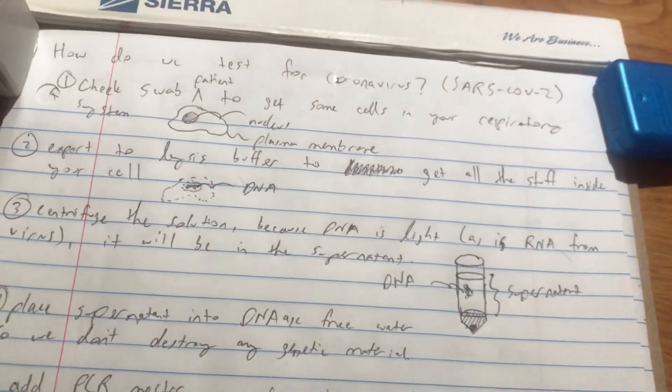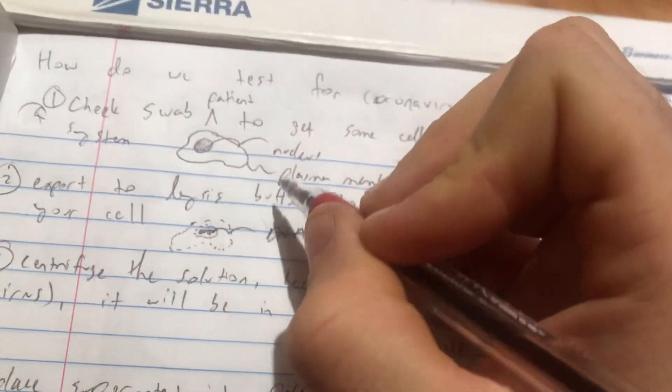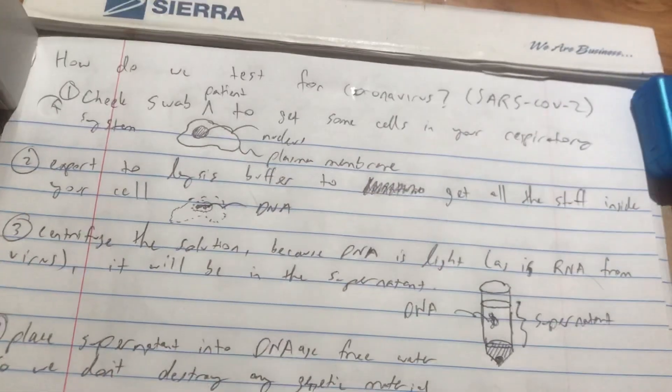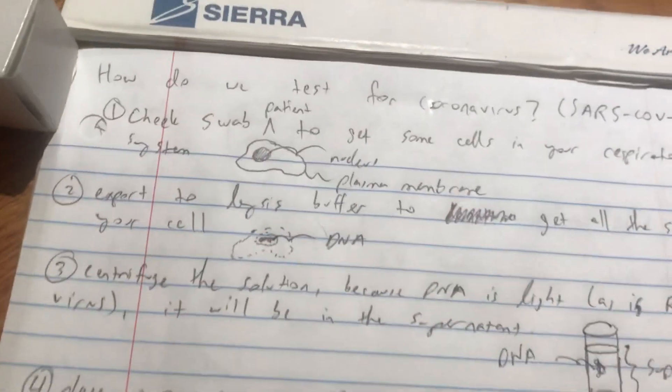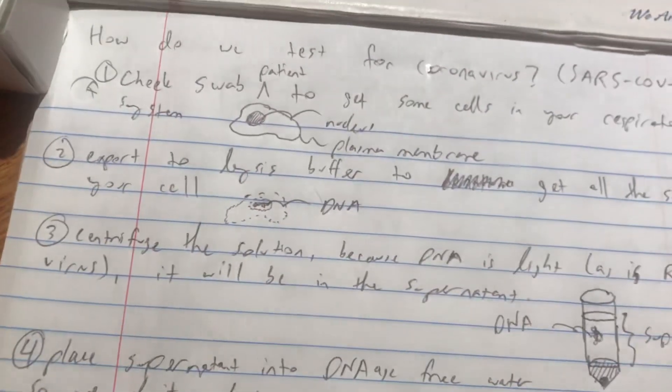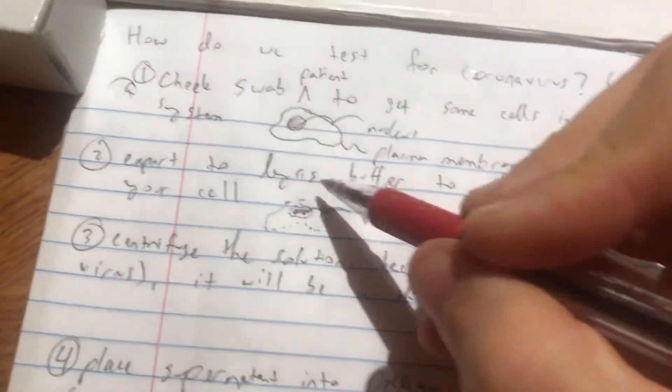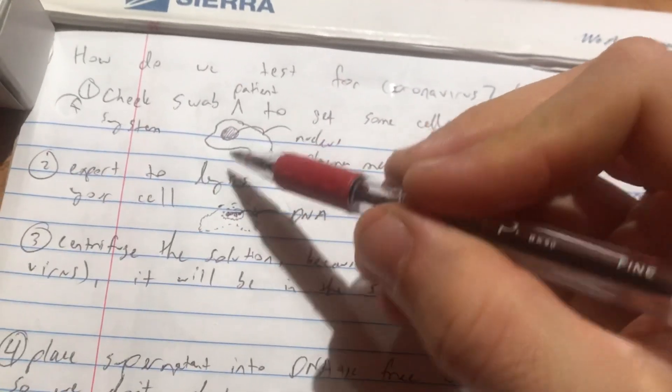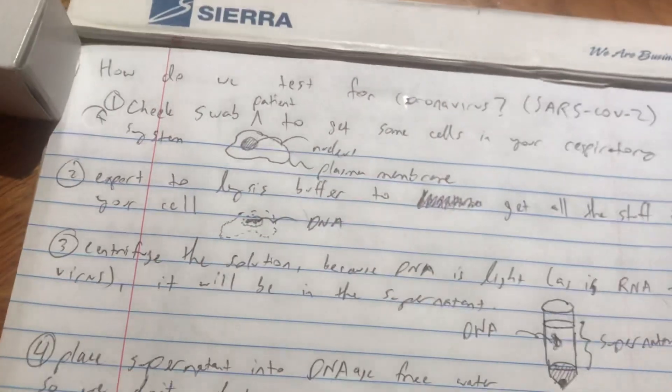So when we swab your respiratory cells, we're going to have things that look like this. It's going to have some kind of plasma membrane, it's going to have a nucleus, there's going to be a lot of stuff inside of the cell. And so the first thing that we do is we're going to export this into lysis buffer. And so what lysis buffer does is it basically takes your cell and it makes the membrane, the plasma membrane, as well as the nucleus, which is another plasma membrane permeable.